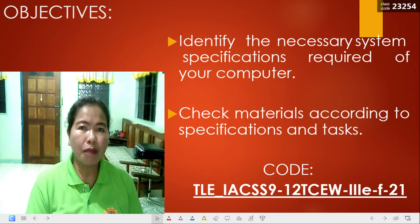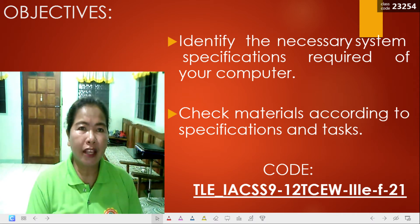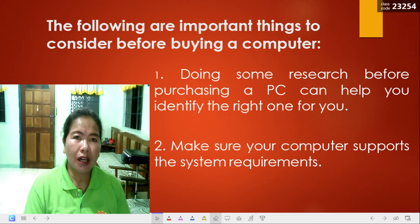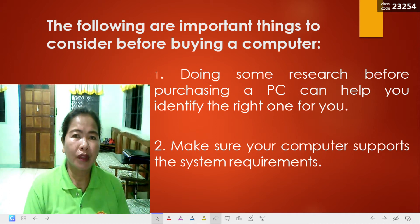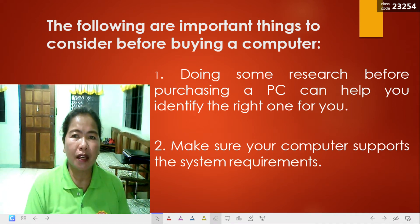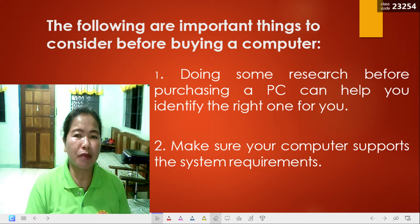In today's world, computers have become very essential in almost every aspect of life. We simply can't do without computing. But how do you buy a computer that will help you complete tasks effectively and efficiently? The following are the important things to consider before buying a computer. Number one is doing some research before purchasing a PC can help you identify the right one for you. The next one is make sure your computer supports the system requirements.